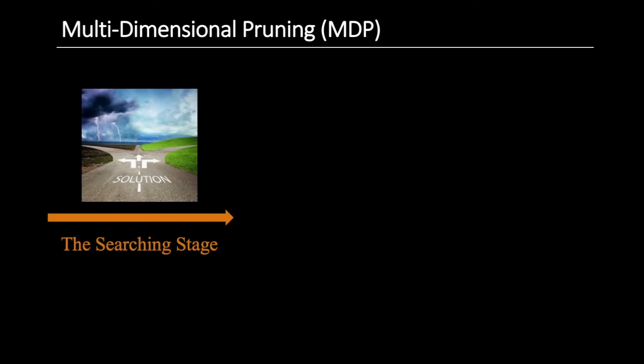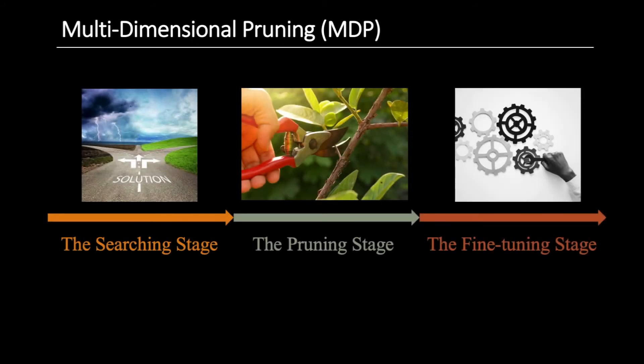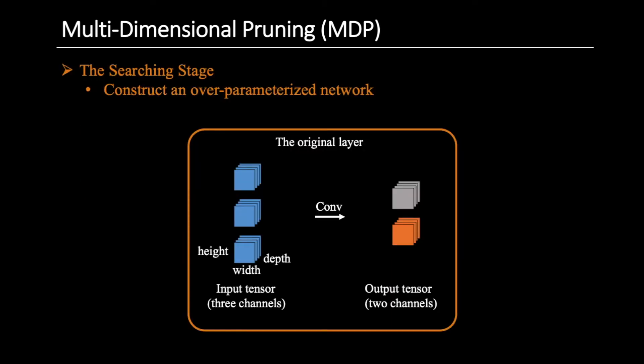Our MDP approach can be divided into three stages: the searching stage, the pruning stage, and the fine-tuning stage. In the searching stage, we firstly construct an over-parameterized network. In this figure, we use pruning a 3D CNN to illustrate our method, and pruning 2D CNNs is a special case of pruning 3D CNNs.